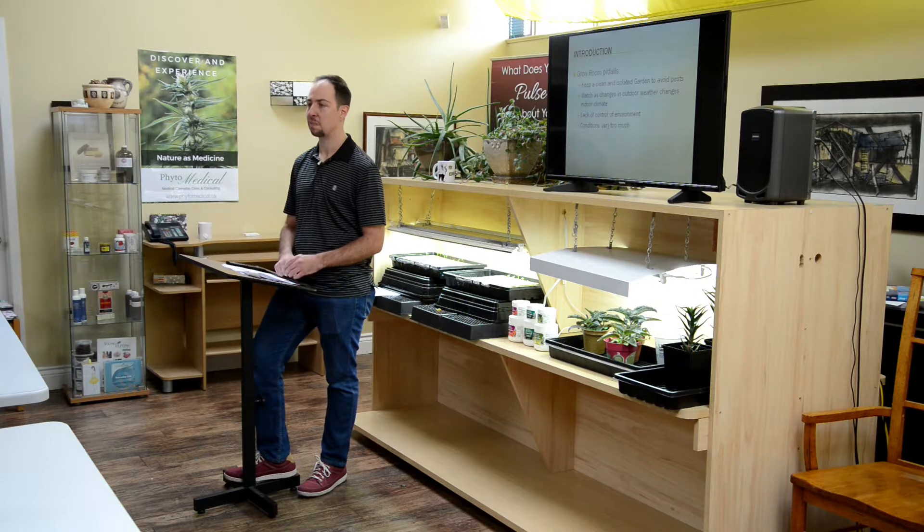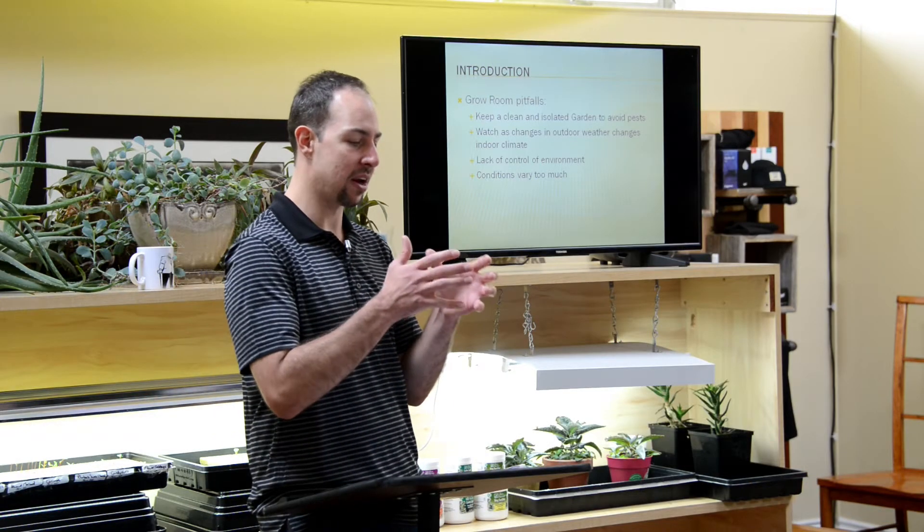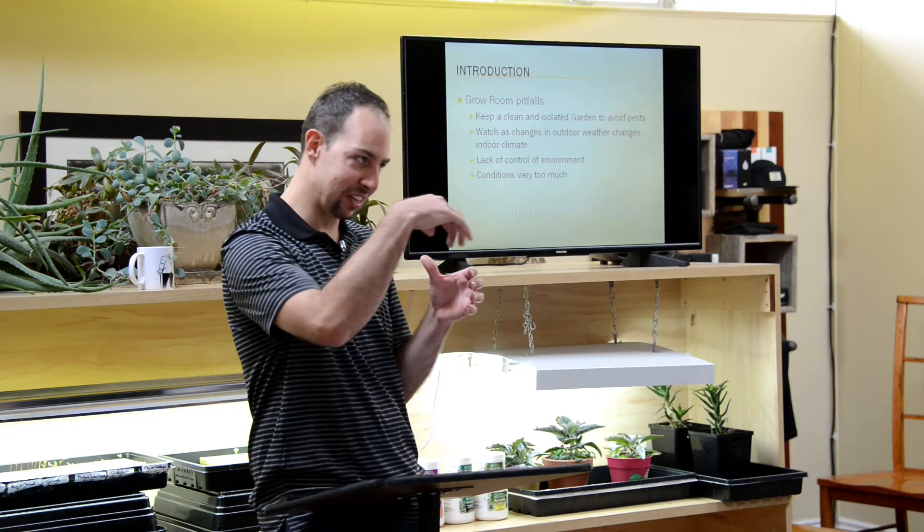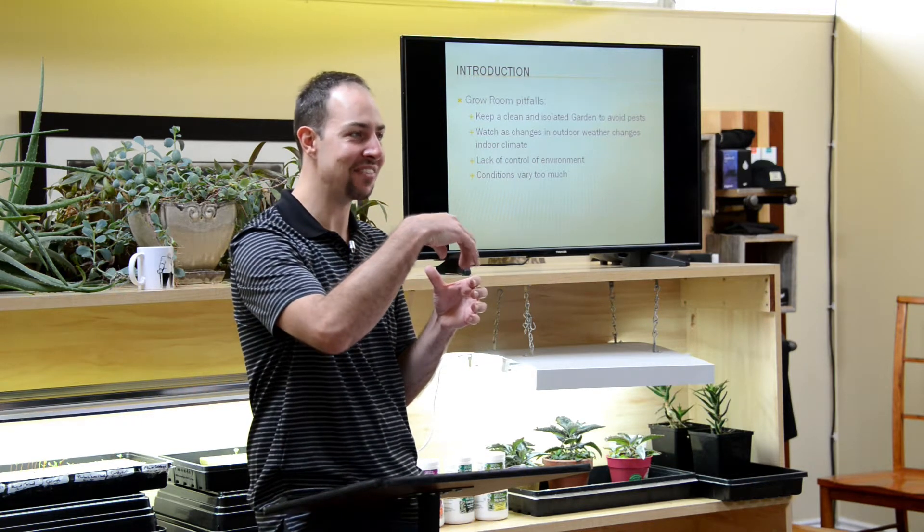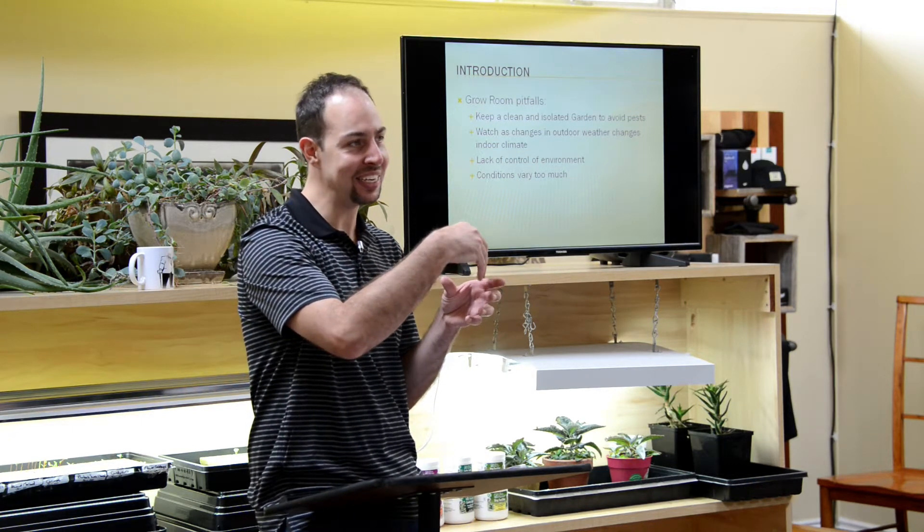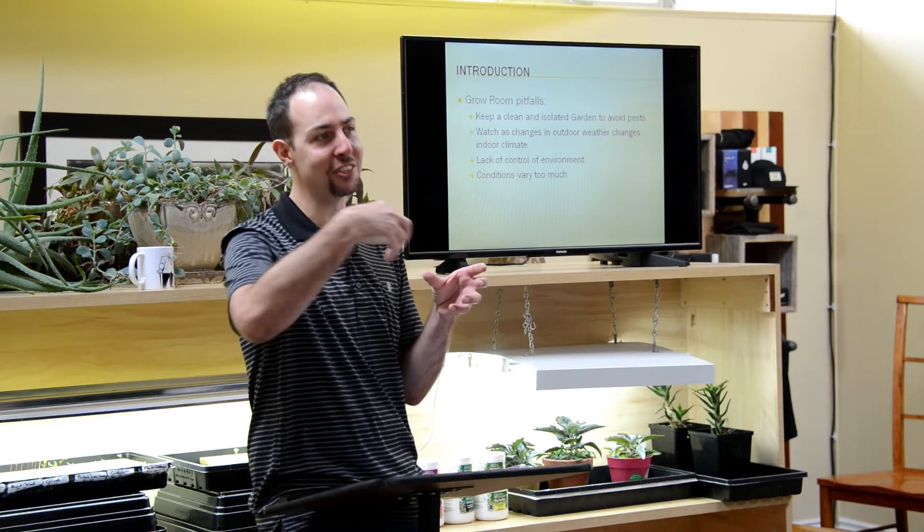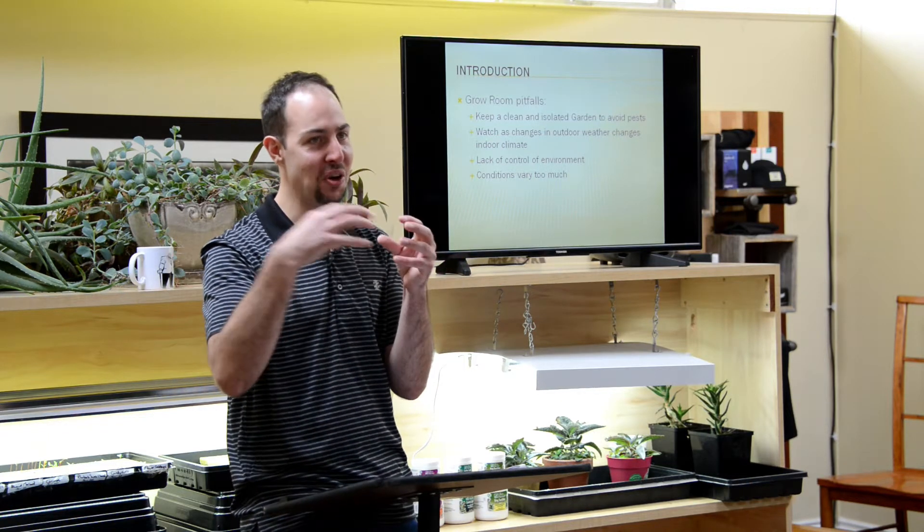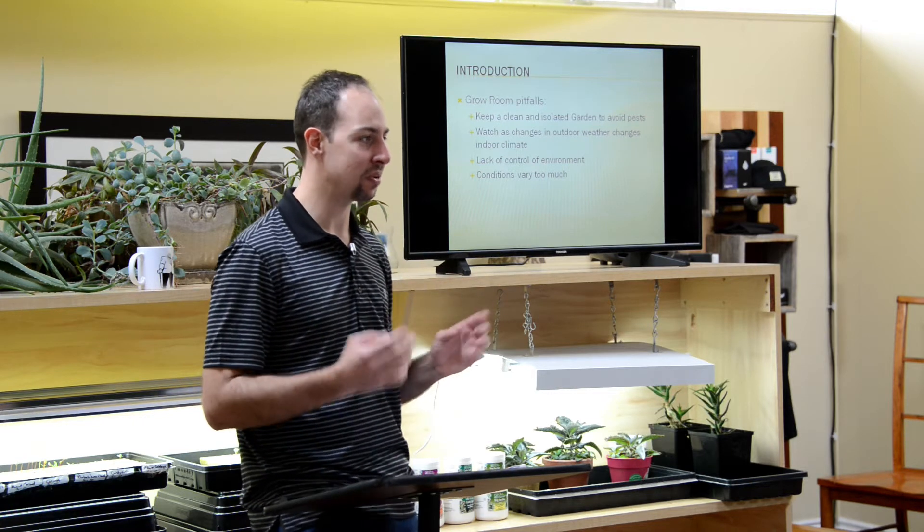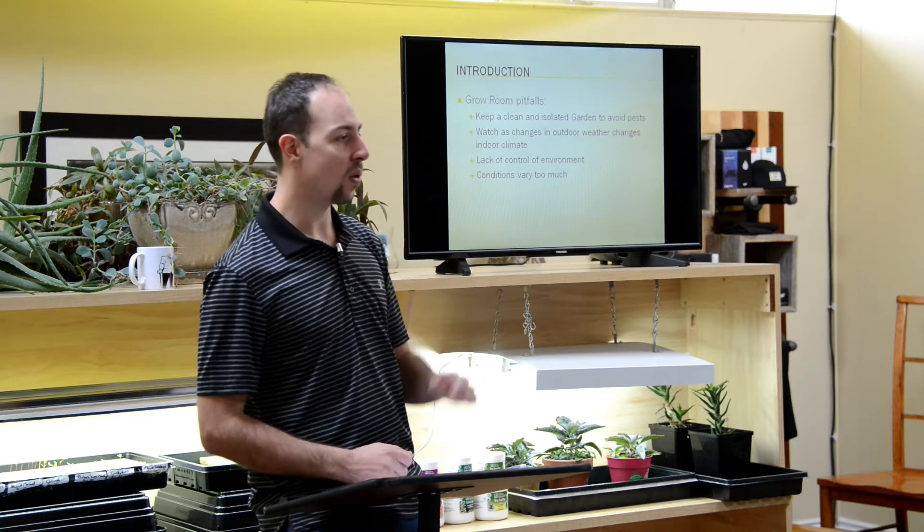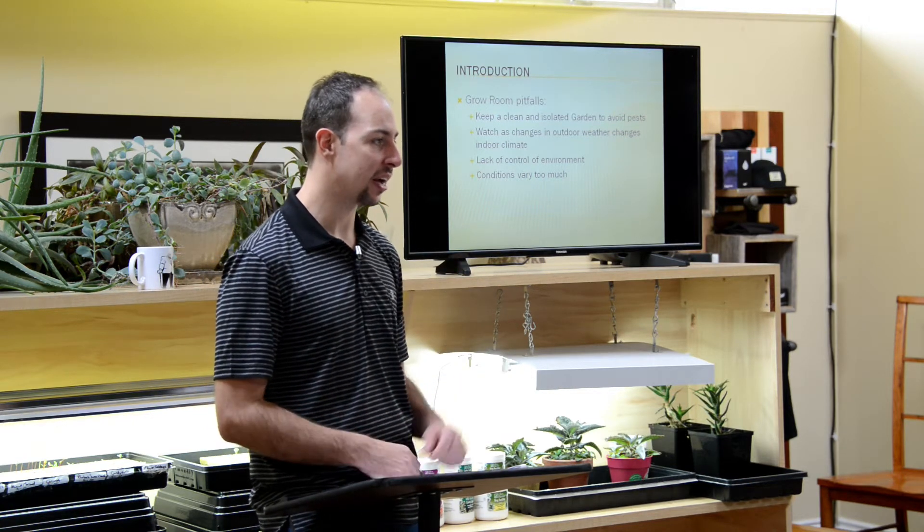And botrytis is another big problem. So that's bud rot. And it's really hard to detect if we've got a big bud here and there's a little bit of grey mold growing inside of it and killing the bud. You won't see that until the grey mold travels to the outside of the bud and kills the whole bud.